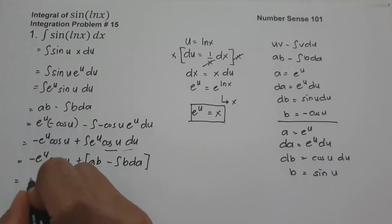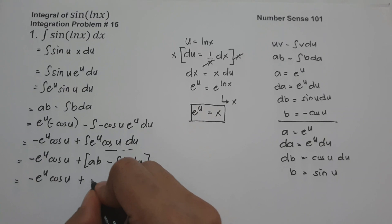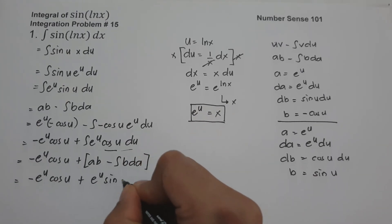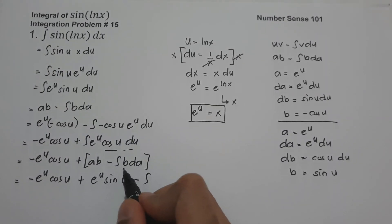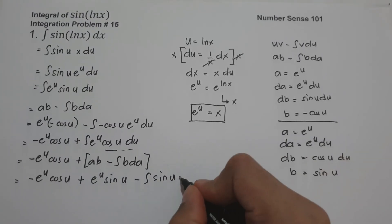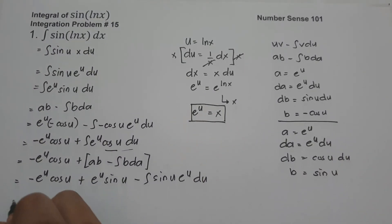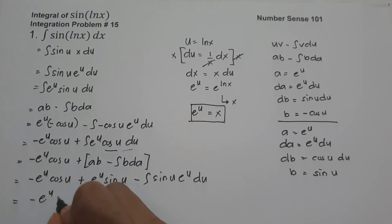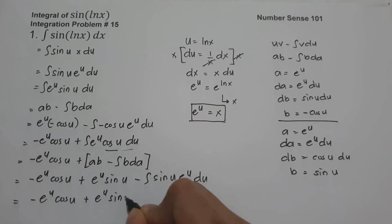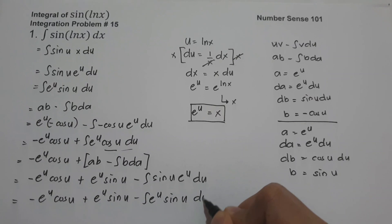So we have negative e raised to u cosine u plus: a is e raised to u, b is sin u, minus the anti-derivative of sin u times e raised to u du. This gives us negative e raised to u cosine u plus e raised to u sin u minus the anti-derivative of e raised to u sin u du.